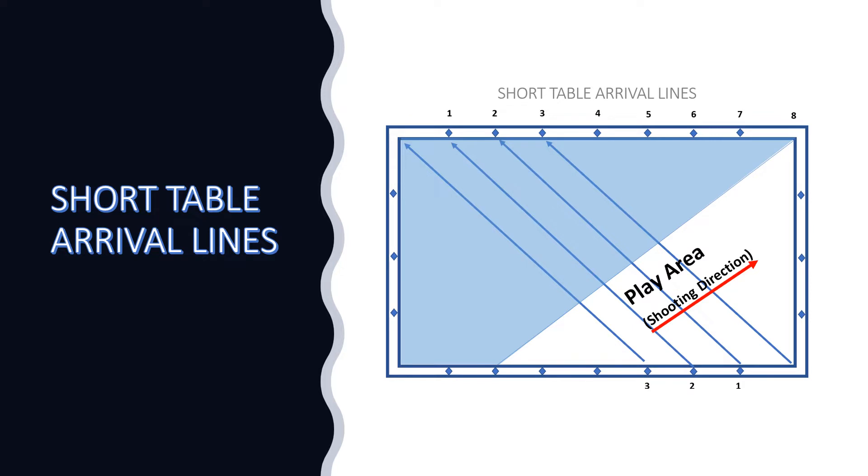When playing on a short table, you will be shooting in the white play area from the bottom left to the top right. Your arrival lines start on the bottom right of the table.